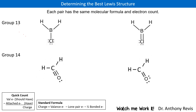Here we have the first line that has a Group 13 structure in it, and they're the same molecular formula and the same electron count as will be the case throughout. So we're going to check the octet rule and we're going to check the charge on the atoms and the overall charge on the molecule. To do the charge, we're going to use a quick count method or the standard formula. Most often I'll use the quick count method. If you're familiar with how to determine charges, see my other video.